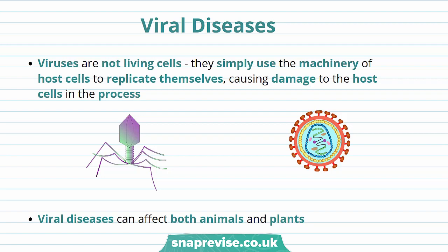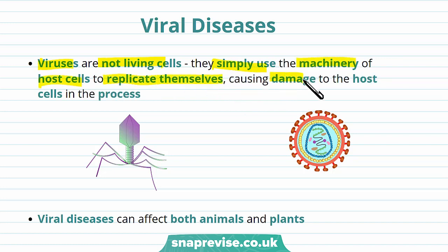Viral diseases are actually communicable diseases. This means they can be spread between animals and plants. Viral diseases occur when a viral pathogen enters your body and causes harm. Viruses are actually not living cells — they simply use the machinery of host cells to replicate themselves. This causes damage to the host cells in the process, and this causes disease.